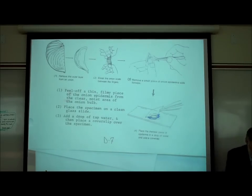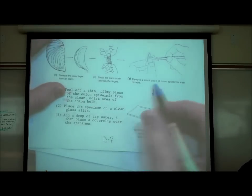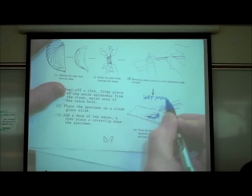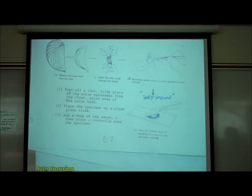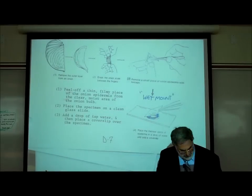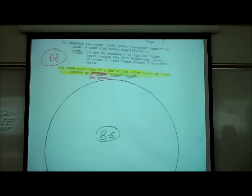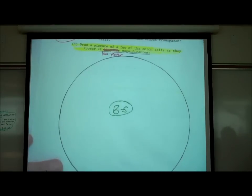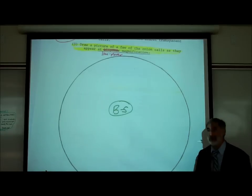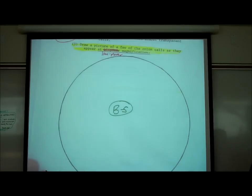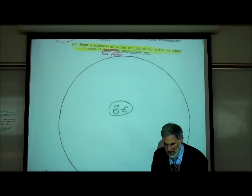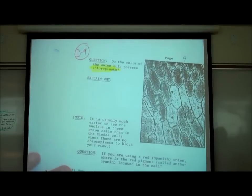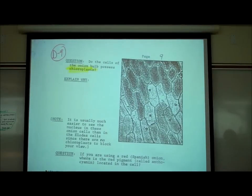We do a wet mount, putting water to keep these onion cells alive. On page D8, we wanted you to draw a picture under low power of what you saw. You should have seen onion cells — they're actually pretty big. On page D9, we asked questions.